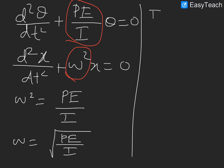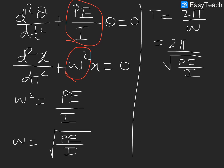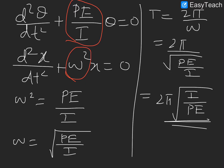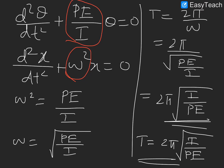Our aim is to find the time period T. T is equal to 2π/ω, which gives T = 2π√(I/PE). This is the time period of oscillation of an electric dipole when you keep that dipole in a uniform electric field, where I is the moment of inertia of the electric dipole, p is the electric dipole moment, and E is the electric field in which you kept the dipole.